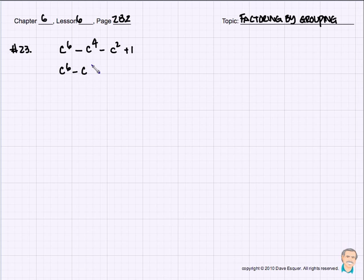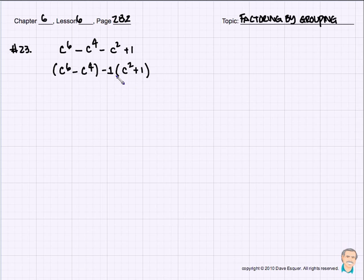This one's going to get a little interesting. Here's our first group. I'm going to put a minus 1 in front of the second group to keep myself organized: c squared plus 1. Notice how the sign changed — I'm grouping them together and I end up with minus c squared minus 1. Minus 1 times c squared is minus c squared, and minus 1 times minus 1 gives me that 1.